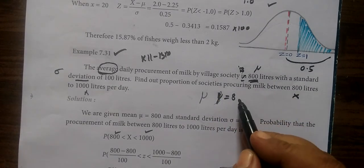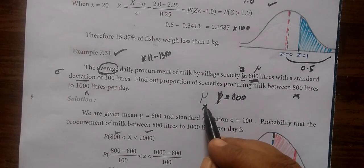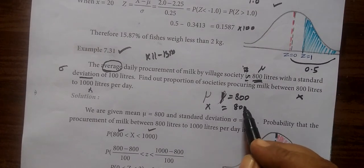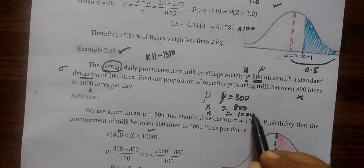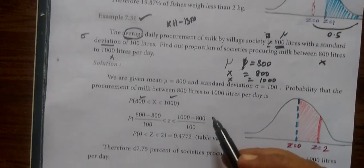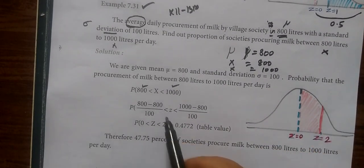So mu equal to 800. x value 800. Then another x value 1000. So this is the direct procedure.